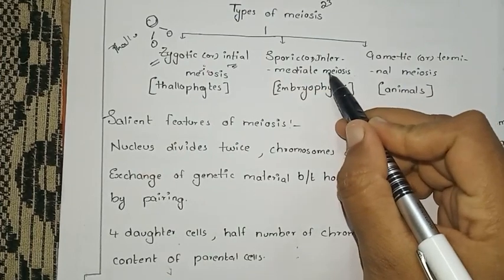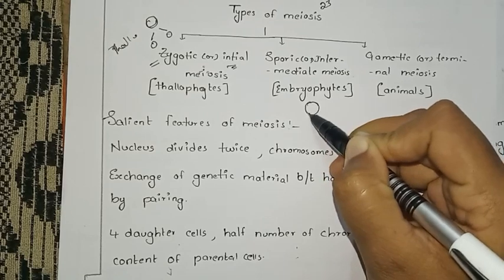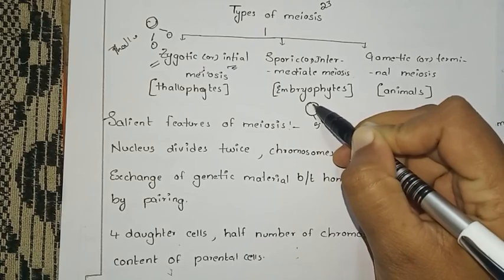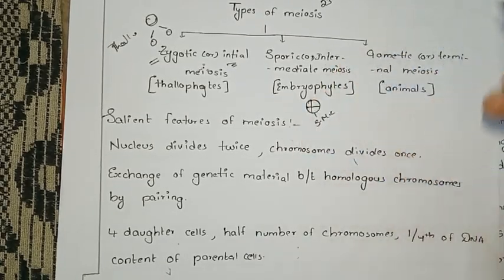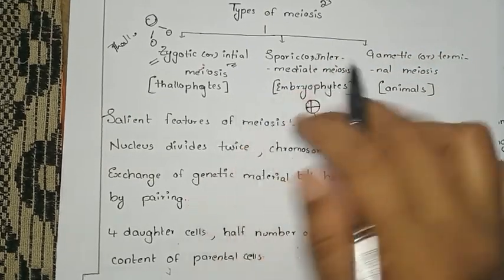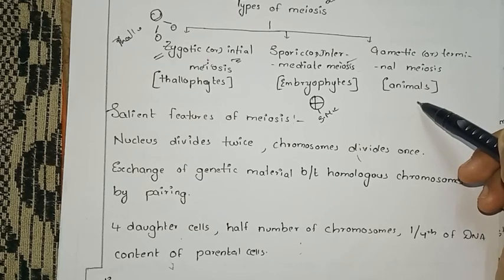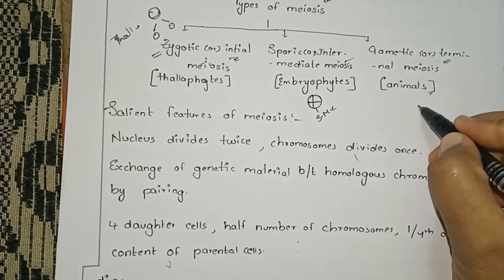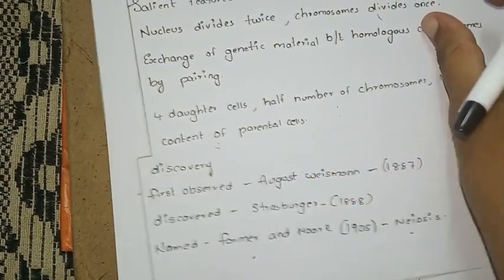Sporoid or Intermediate meiosis occurs in embryophytes, specifically in spore mother cells. It occurs during the IV reduction division, at fertilization — this is Intermediate meiosis. Gametic or Terminal meiosis is the last type. This is the reduction division that produces gametes.